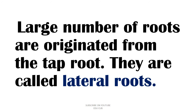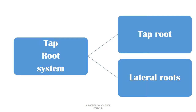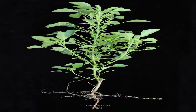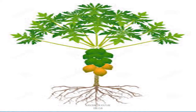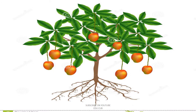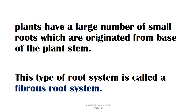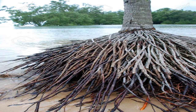These smaller roots are called lateral roots. So the tap root system can be divided into two parts: the tap root and lateral roots. Some examples of plants which have a tap root system are guava, papaya, and mango. Some plants have a large number of small roots originating from the base of the plant — this type of root system is called the fibrous root system.